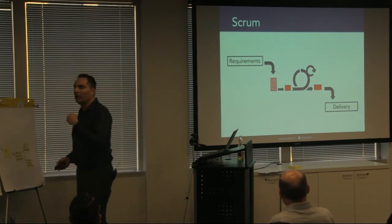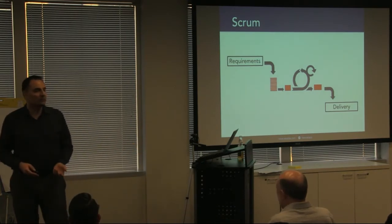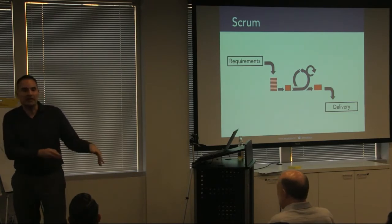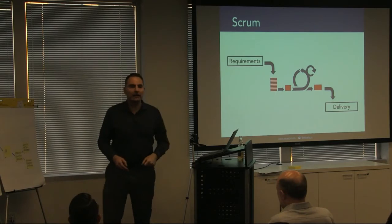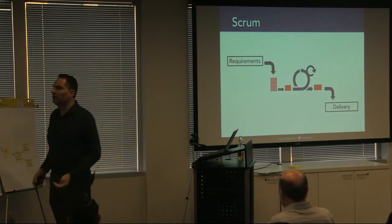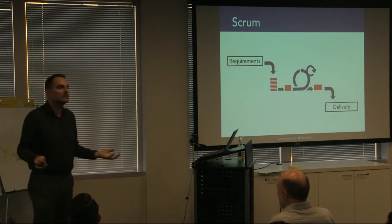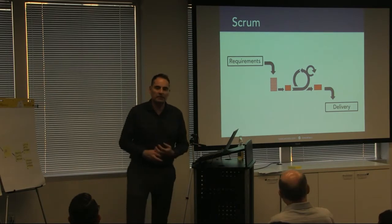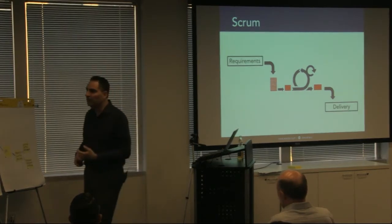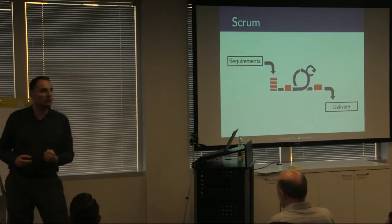We have a long requirements phase that creates the backlog, which then hardly ever changes because we've done all this analysis and we think we know exactly what we need. Then the dev team iterates furiously and cranks out working software every couple of weeks — which is great — and then throws it over the wall to the ops guys, where it sits and sits. We might be cranking out working software every two weeks only to deploy it twice a year.